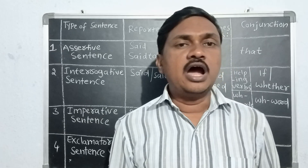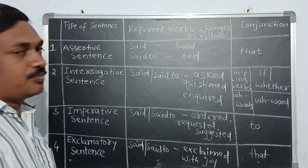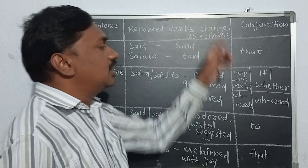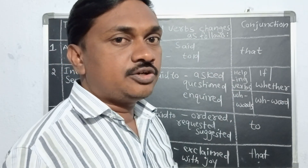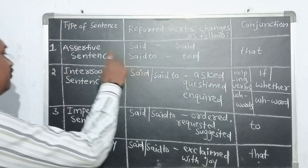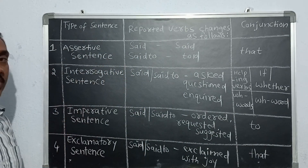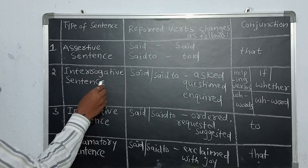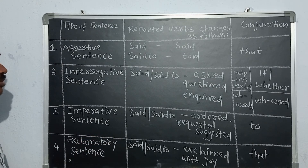Today I am going to teach you the conjunctions and reported verbs — how the reported verb and conjunctions change when converting direct speech into indirect speech. There are four types of sentences in English: assertive sentence, interrogative sentence, imperative sentence, and exclamatory sentence.